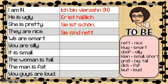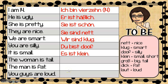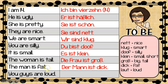Here you can see the difference between the two 'sie's': we know it is 'she' because the verb is 'ist,' and we know it is 'they' because the verb is 'sind.' 'We are smart' — 'Wir sind klug.' 'You are silly' — 'Du bist doof.' 'It is small' — 'Es ist klein.' 'The woman is tall' — remember, if we take the woman out of the sentence and replace it with a pronoun, we would replace it with 'she,' so that's how we know how to conjugate: 'Die Frau ist groß' / 'Sie ist groß.' Same thing with the man — we would replace it with 'he': 'Der Mann ist dick.' 'You guys are loud' — 'Ihr seid laut.'